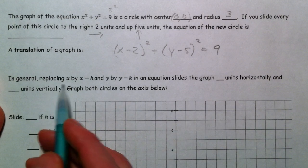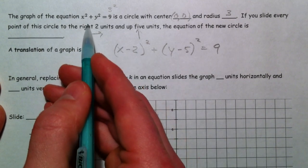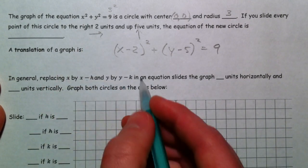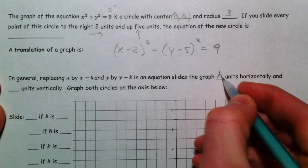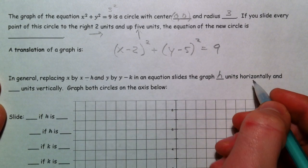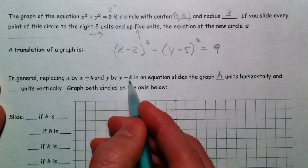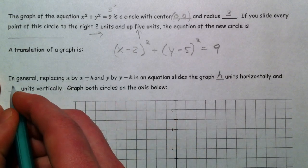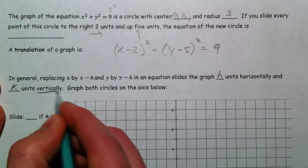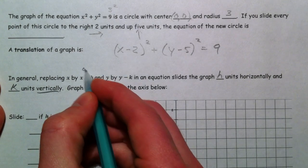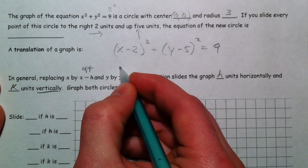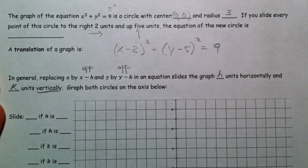Remember, it's x minus h, y minus k. It's opposite for both of them. And the radius is still going to be the same. So it's still going to be 9, which is 3 squared. So in general, replacing x with an x minus h, just like we did, x minus 2, slides the graph h units horizontally. And the one with the k, the y, will shift it k units vertically. Opposite. Opposite. For both cases.